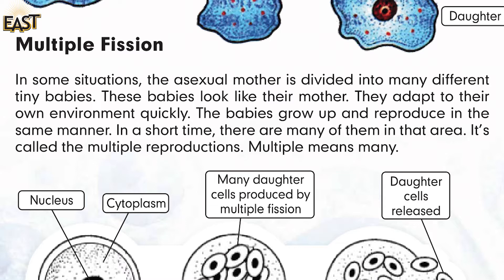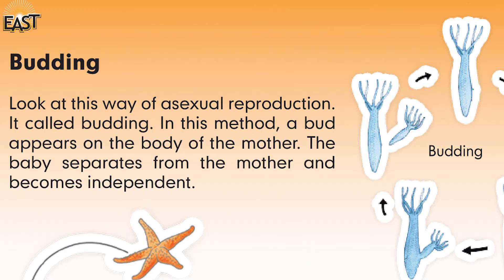It's called the multiple reproductions — repeat after me: it's called the multiple reproductions. Multiple means many. Budding — look at this way of asexual reproduction, it's called budding. In this method, a bud appears on the body of the mother — repeat this sentence.